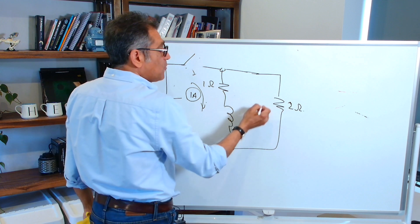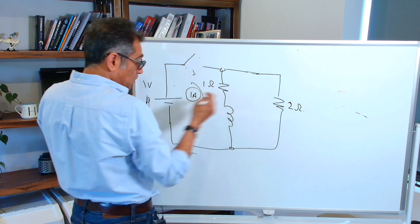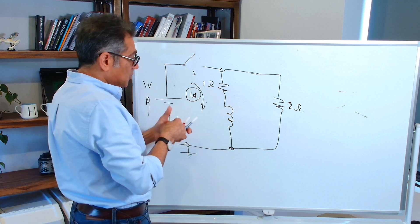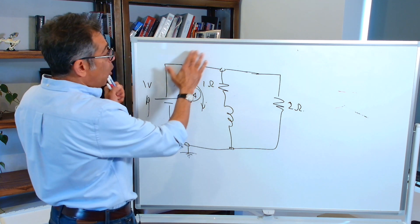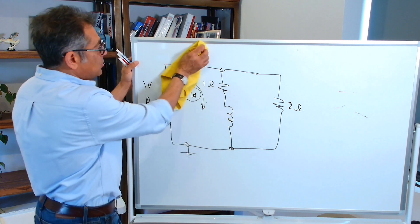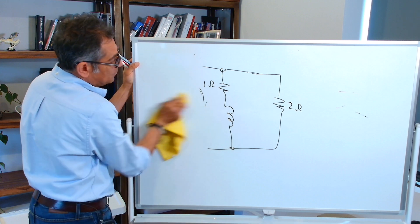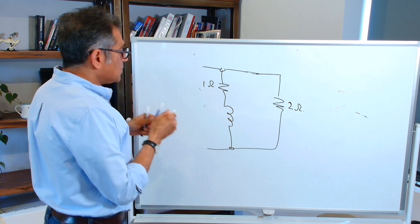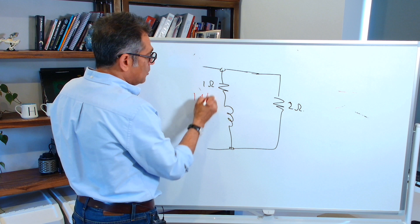So the current has to flow. It's flowing this way. So it's going to have to continue to flow. This is opened up. So this is actually out of the picture. The inductor wants one amp to flow here.